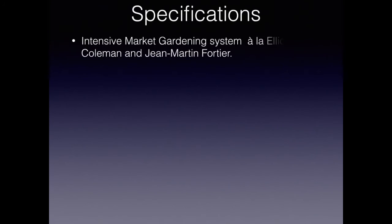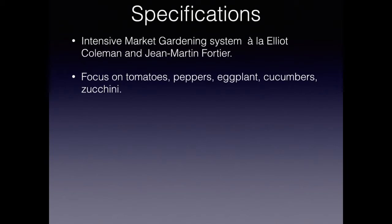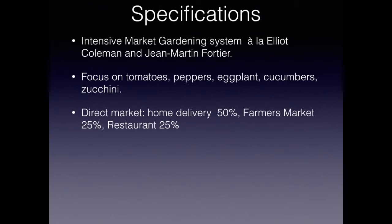For my specifications — now you can see this is getting down to more detail. I'm going to use intensive market gardening systems à la Elliot Coleman and Jean-Martin Fortier. I know this is how I want to set up my farming operations. I'm going to focus on tomatoes, peppers, eggplants, cucumbers, and zucchinis, because they grow really well where I am, I can get high value for them, and they're relatively easy to grow. I'm going to direct market via 50% home delivery, 25% farmer's markets, and 25% to restaurants.